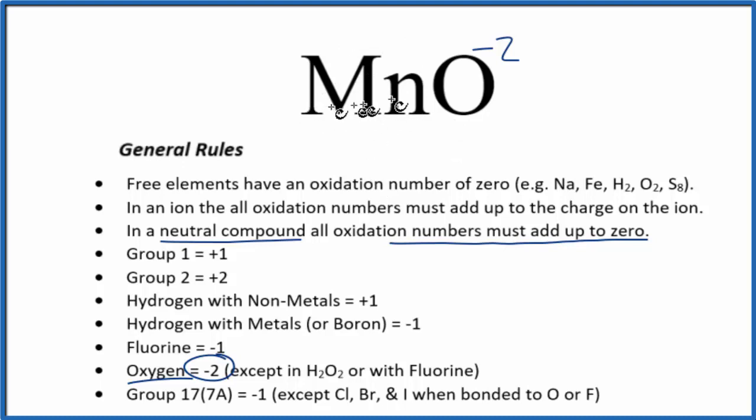So we have a negative two here, and we know everything has to add up to zero. So this is just going to be a plus two, and that's why we call this manganese 2 oxide. Again, if you add up these numbers, plus two and minus two, you get zero, since it's a neutral compound.